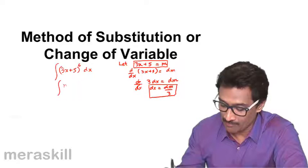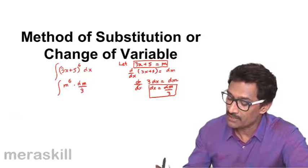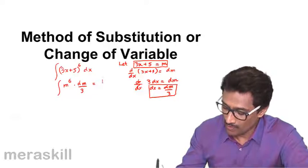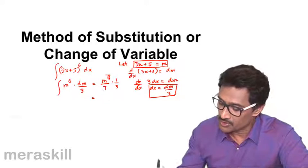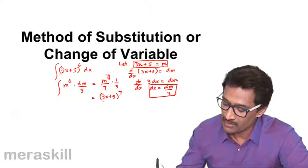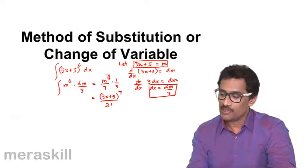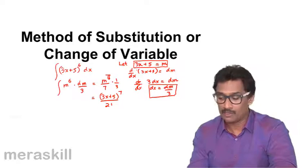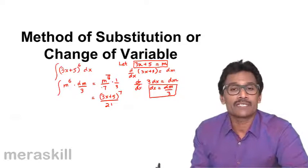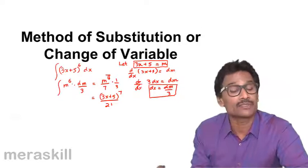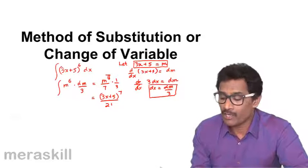We have taken 3x + 5 as m. Once you substitute a variable, the dx also has to be changed to dm/3. Eventually this becomes m^7/7 × (1/3). Substituting back, it is (3x + 5)^7 / 21, which we would have obtained using the special variable method as well. So when we take an expression as another variable, the dx changes accordingly.